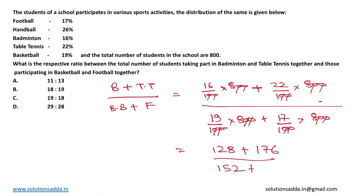Therefore 128 plus 176 is 304, divided by 152 plus 136, which equals 288. So we have 304 divided by 288.